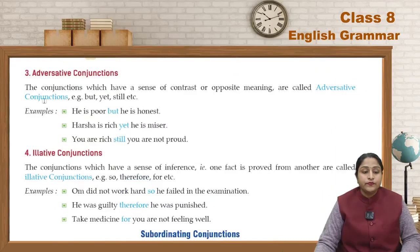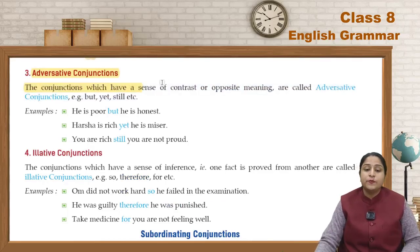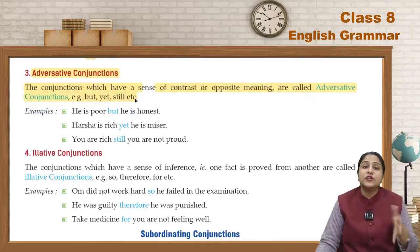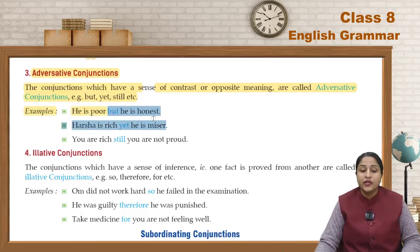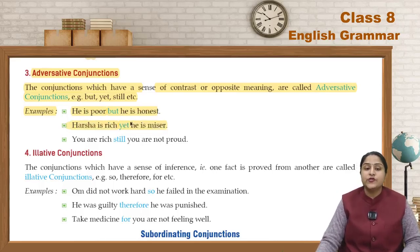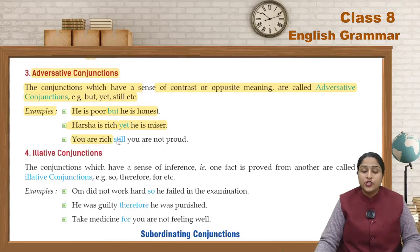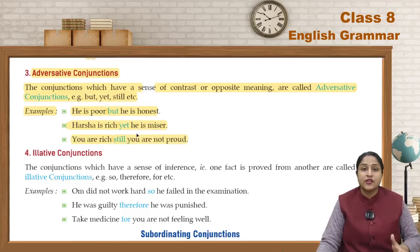Next are Adversative Conjunctions. These are conjunctions which have a sense of contrast or opposite meaning. Examples include: but, yet, still, etc. Examples: 'He is poor but honest.' 'Harsh is rich yet he is a miser.' 'You are rich still you are not proud.' So here two ideas are in contrast — they are opposite.